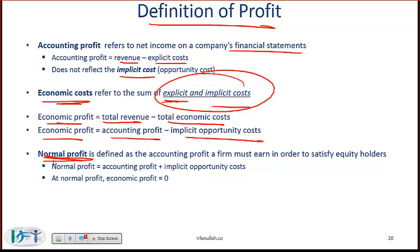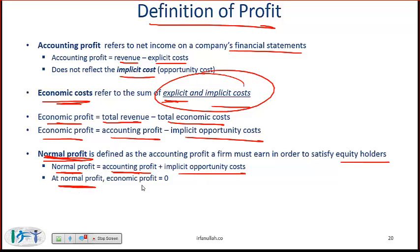You also need to learn the term normal profit. Normal profit is defined as the accounting profit a firm must earn in order to satisfy equity holders. We are thinking of a large company where equity holders invest their equity and require a certain return. That required return can be thought of as the opportunity cost or implicit cost. So normal profit is accounting profit plus the implicit opportunity cost. If we are at normal profit, then the economic profit is zero.